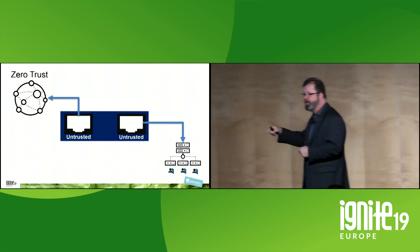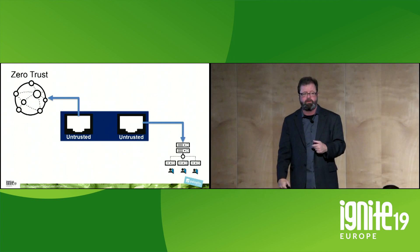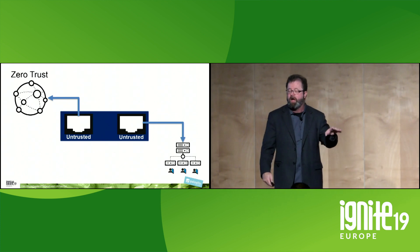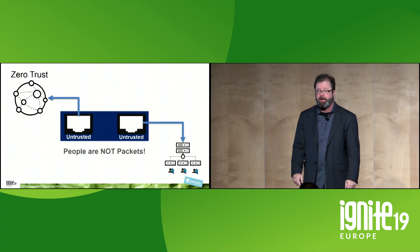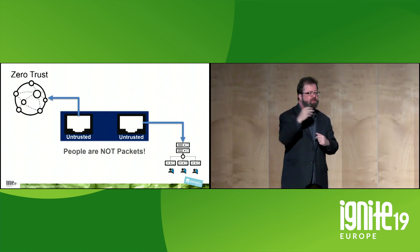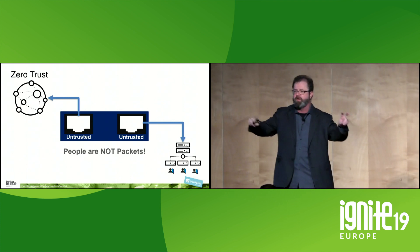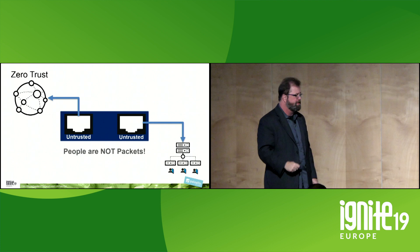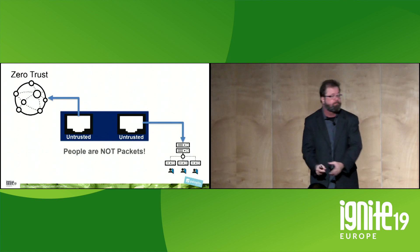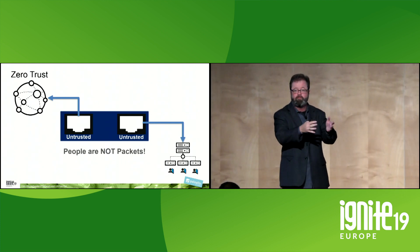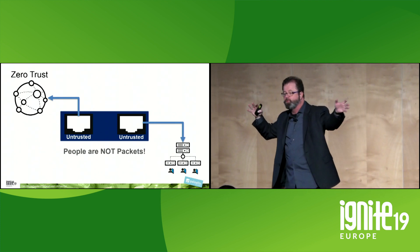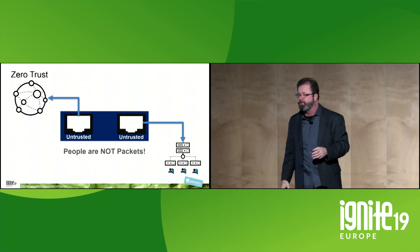People will say to me, John, you are saying that people are untrustworthy. I'm not saying that at all. I'm saying something much more profound: I am saying people are not packets. No person has ever been on a network. It is the anthropomorphization of the network that's killing us — the idea that John is on the network, that Hans Q is on the network. I have never been on a network.